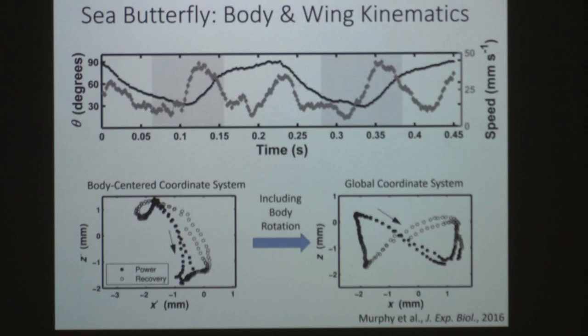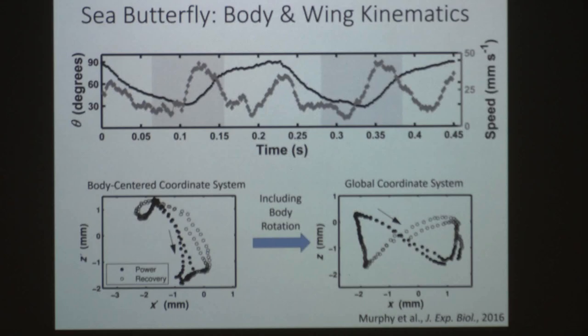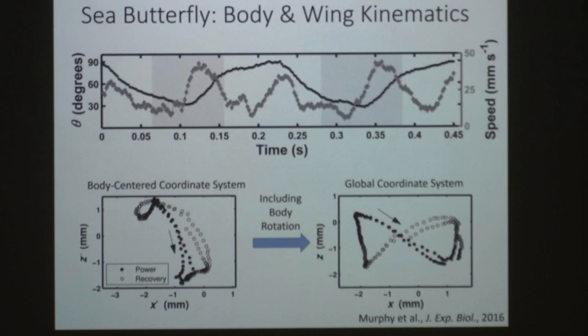Looking at the wingtip paths in a body-centered coordinate system, the power stroke (black) and recovery stroke (open) produce a strange pattern that doesn't clearly show how lift is generated. But when you include body rotation in the transformation, it becomes a very classic, beautiful sideways figure-eight pattern — very reminiscent of what many insects do. This made us think the animal could actually be using the same fluid dynamics as insect flight.